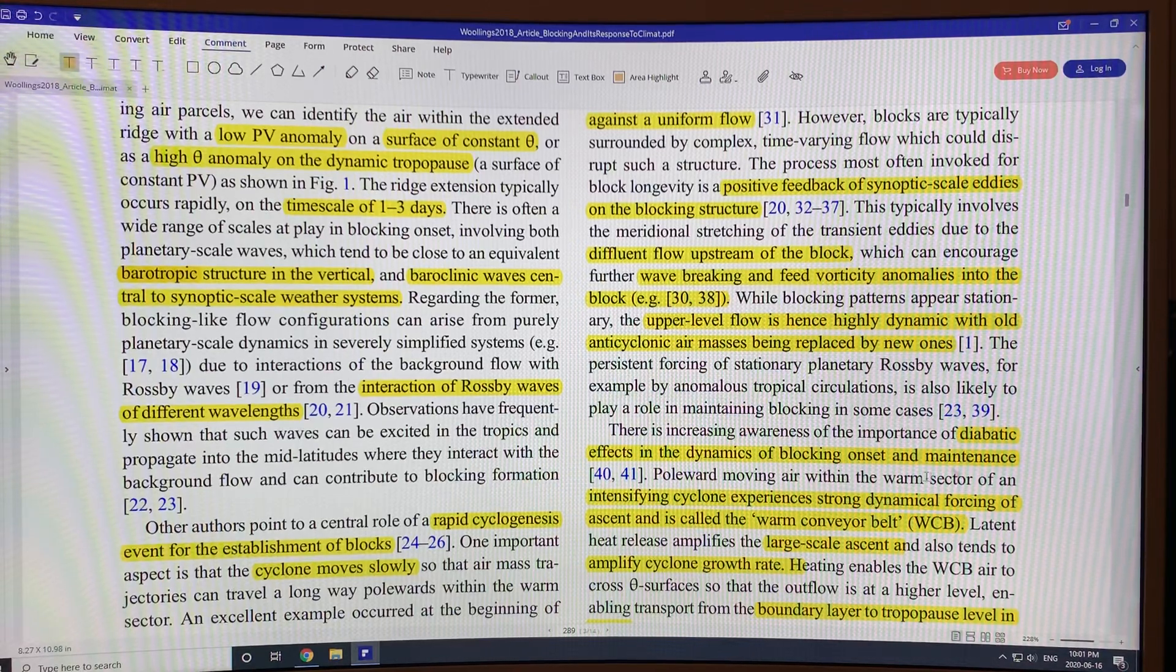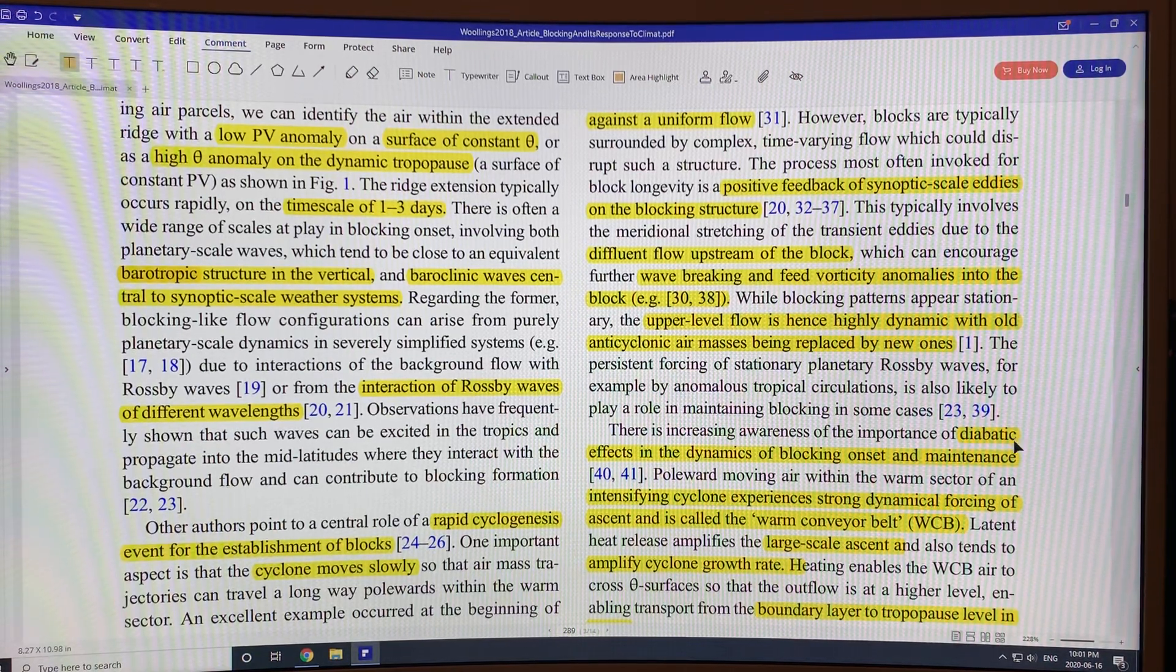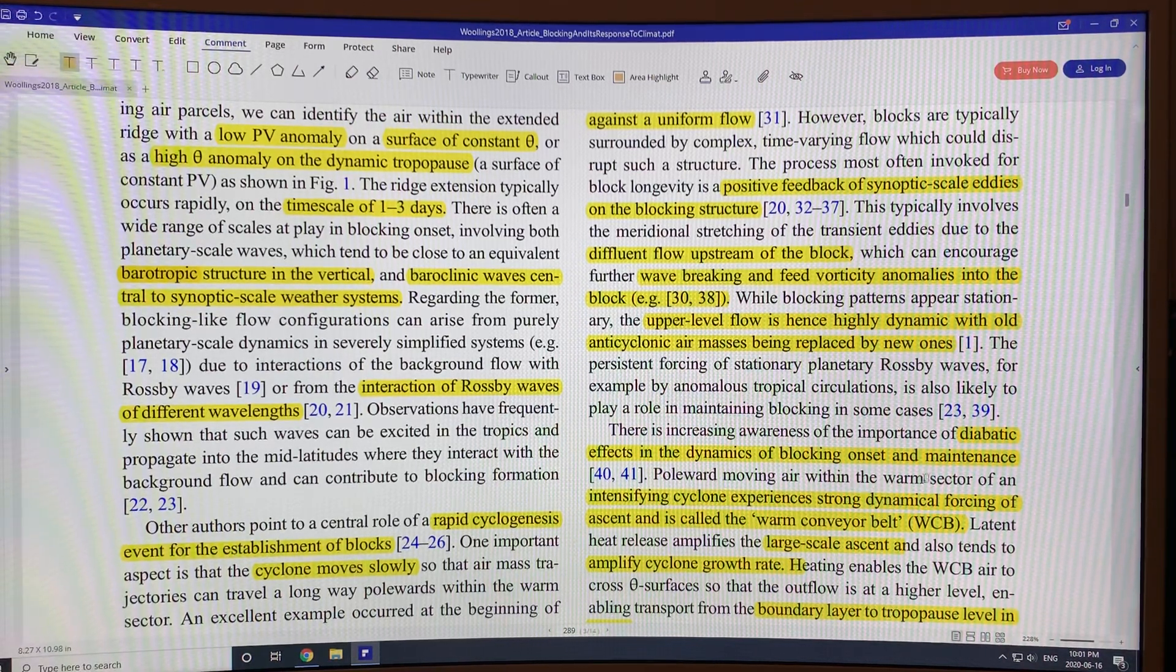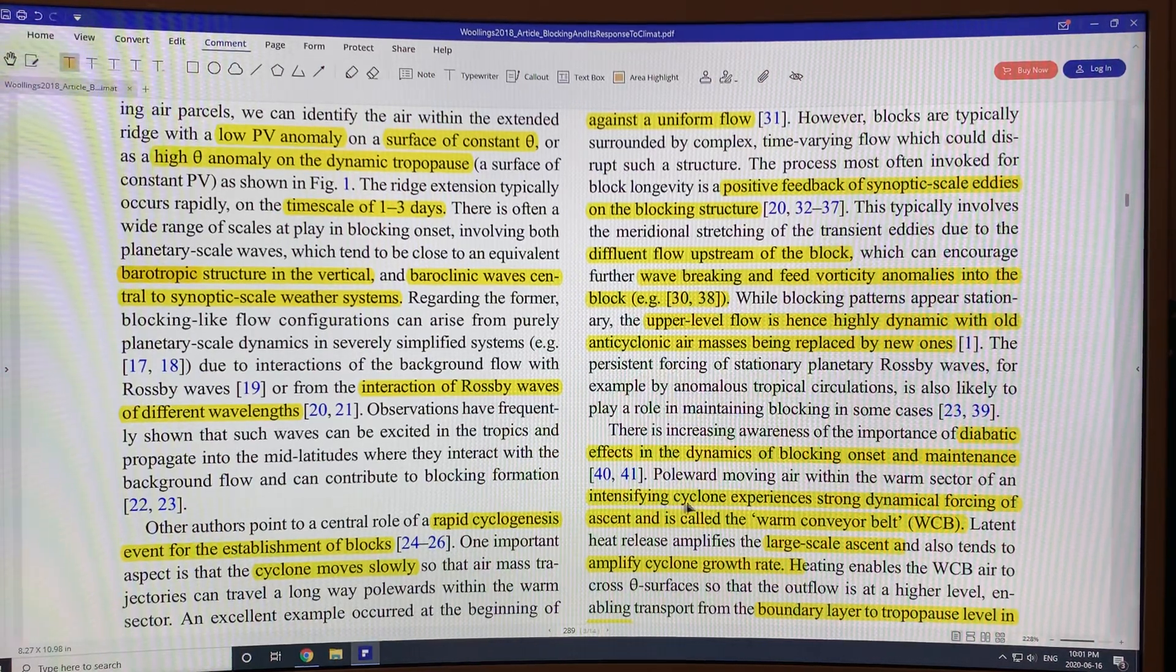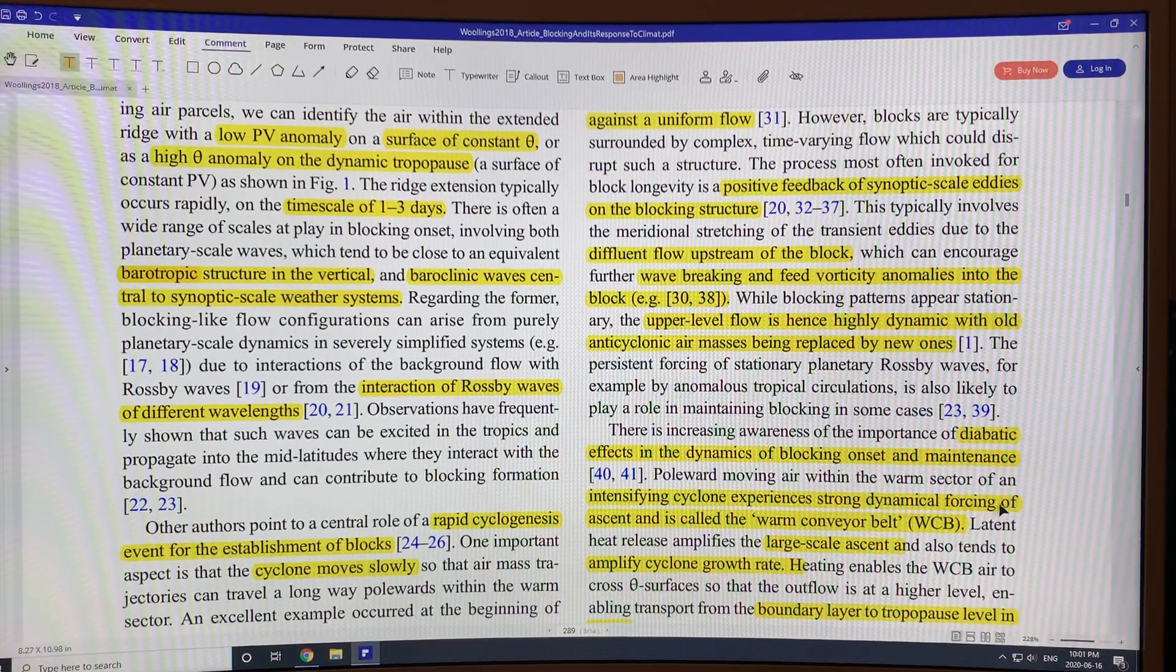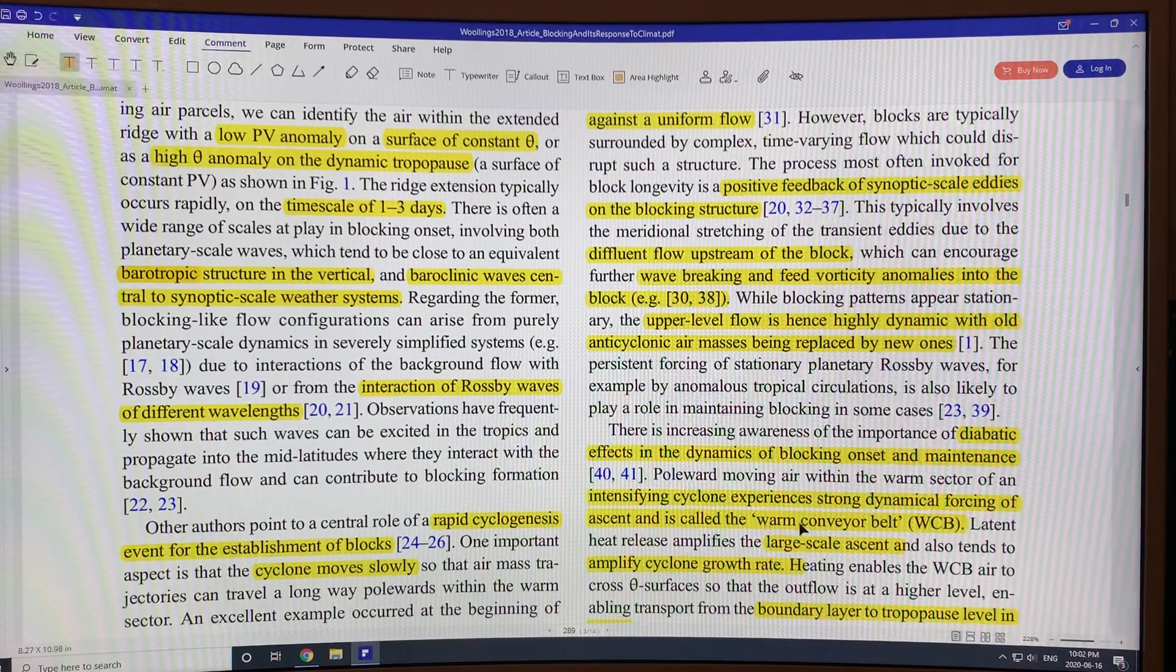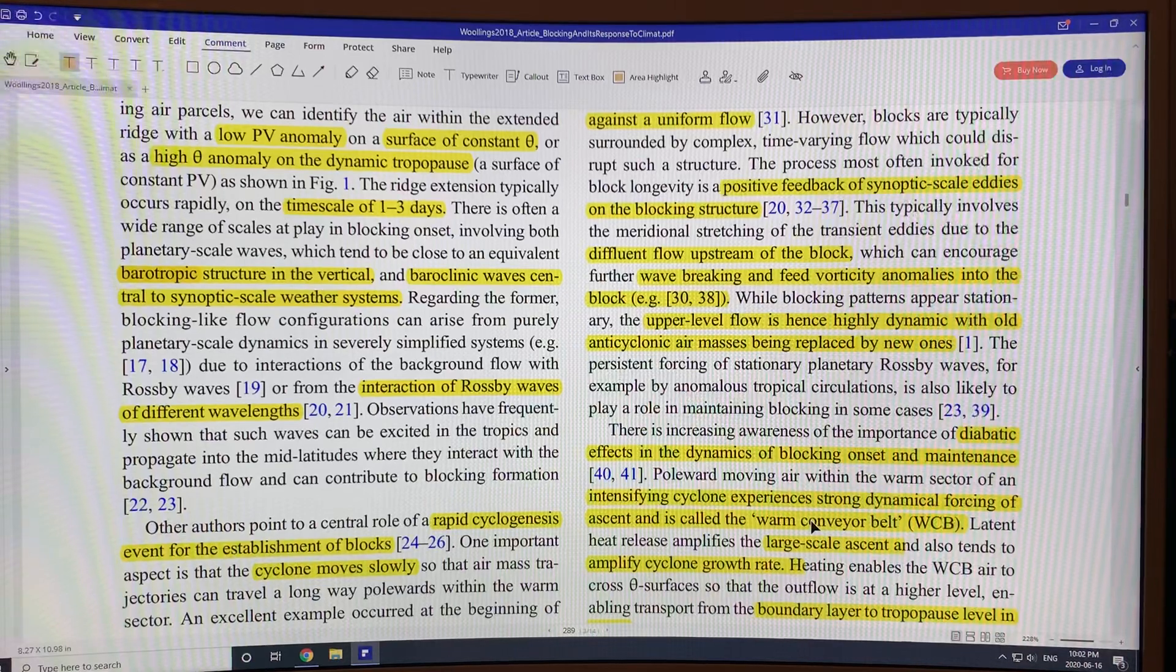There's also diabatic effects that are thought to be involved in the dynamics for the onset of the blocking and the maintenance. So what diabatic is, energy is added to the system. You can have poleward moving air within the warm sector underneath the ridge of an intensifying cyclone. You get strong dynamical forcing. This stuff is rising through the atmosphere into the ridge and it's called the warm conveyor belt.